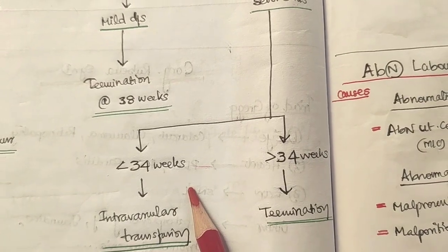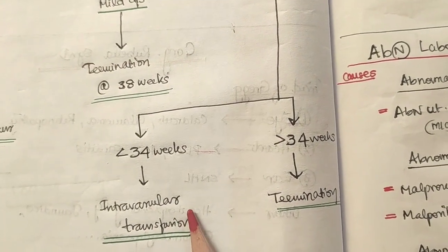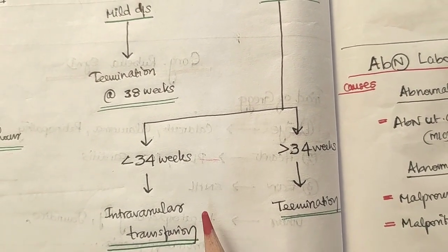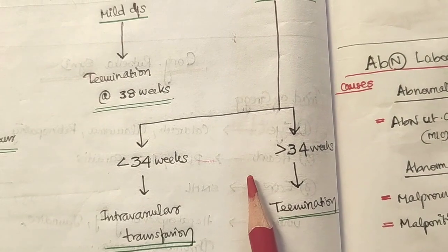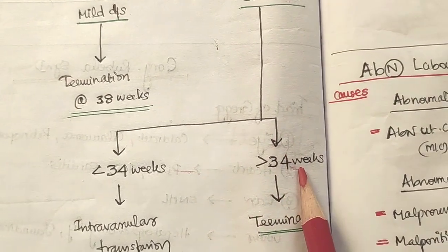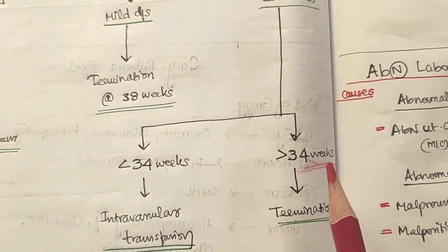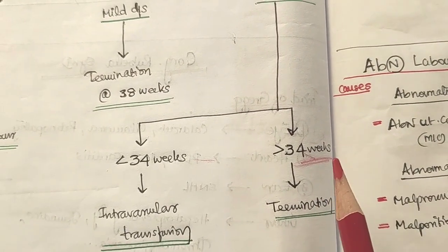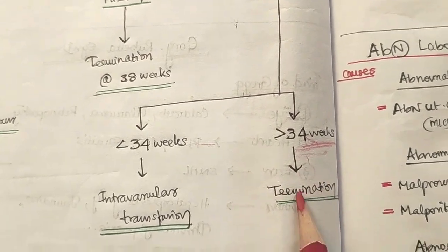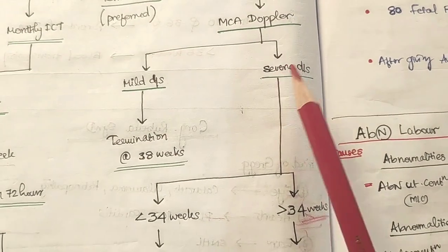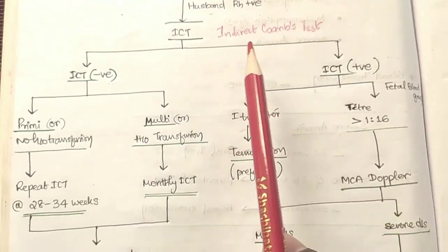When gestational age is less than 34 weeks in severe disease, the only option is intravascular transfusion of blood to the fetus. We observe and wait until 34 weeks is reached. At 34 weeks or more, viability of the baby is much better, and we can safely terminate the pregnancy.